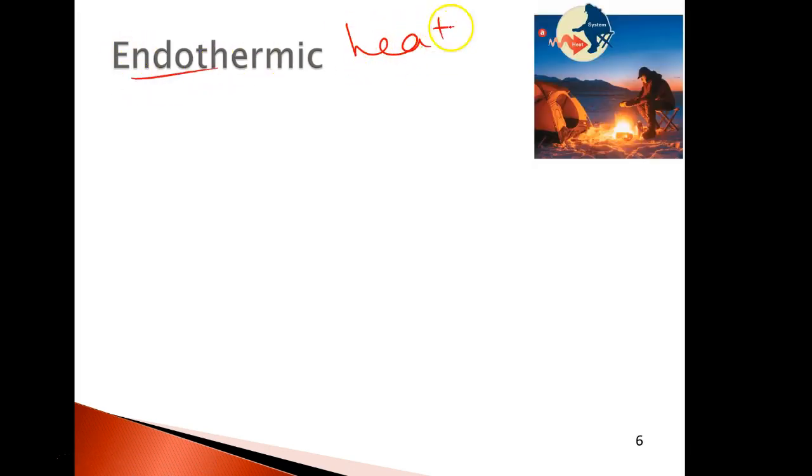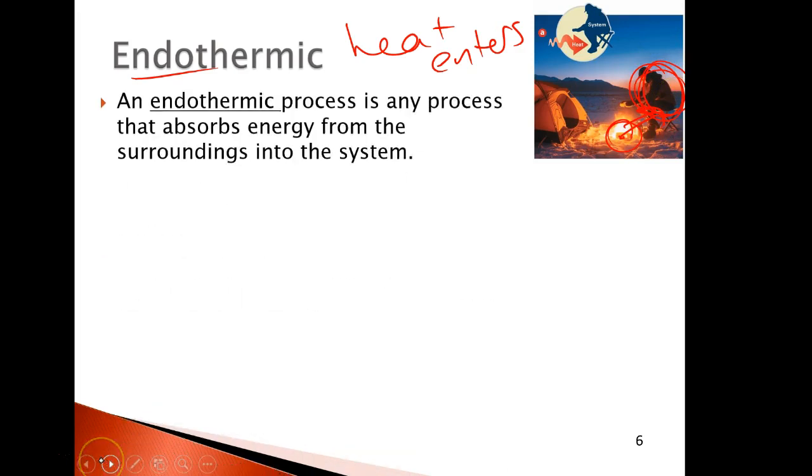Endothermic means heat enters the system. So if you're talking about this guy's body, heat is going into his body from the fire. Now, if you're talking about the fire as the system, the fire is producing heat. It's exothermic. This, if your body is a system, it's endothermic. And so energy goes in for endothermic.